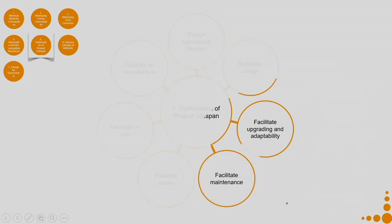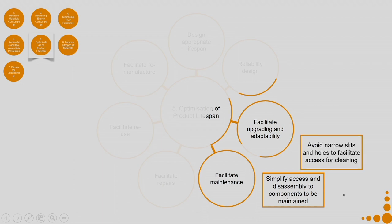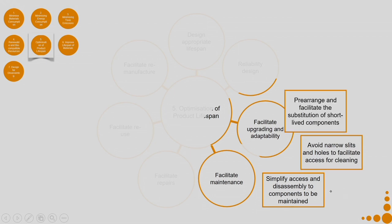Then coming to facilitate maintenance: simplify access and disassembly to components to be maintained. Avoid narrow slits and holes to facilitate access for cleaning. Pre-arrange and facilitate the substitution of short-lived components — maybe place all short-lived components in one particular panel so I just remove that panel and have access to all of them.